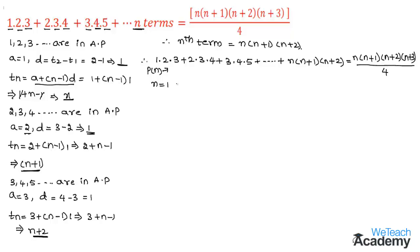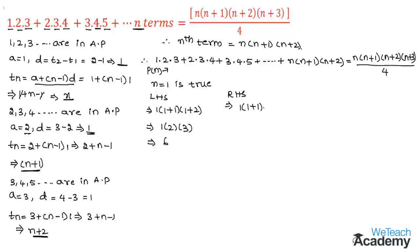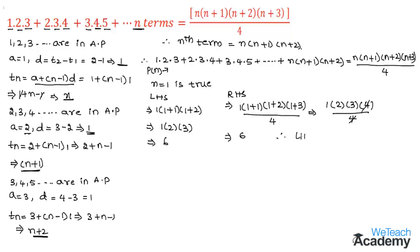First let us prove for n = 1. Substituting in LHS we get 1×2×3 = 6. Now substituting n = 1 in RHS we get 1×(1+1)×(1+2)×(1+3) / 4 = 1×2×3×4 / 4. We can cancel 4 in numerator and denominator, giving 6. Since LHS = RHS = 6, we conclude that P(1) is true.